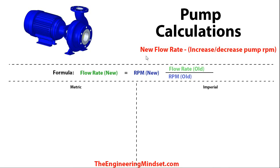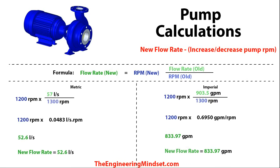For this first calculation, we're going to find out what the new flow rate would be if we were to increase or decrease the pump revolutions per minute. To do that, we're going to use this formula: the new flow rate equals the new RPM multiplied by the division of the old flow rate divided by the old RPM.